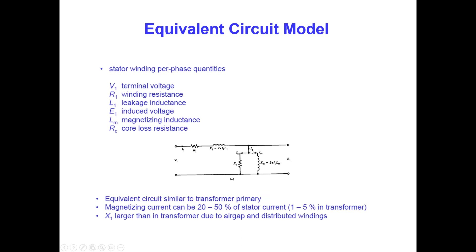The stator equivalent circuit is similar to the transformer primary side. However, for a transformer the magnetizing current is very small — about 1 to 5 percent — but for a motor, the current Im going into Xm is very large, about 20 to 50 percent of the stator current. Also, X1 is much larger in this AC motor compared to the transformer model.